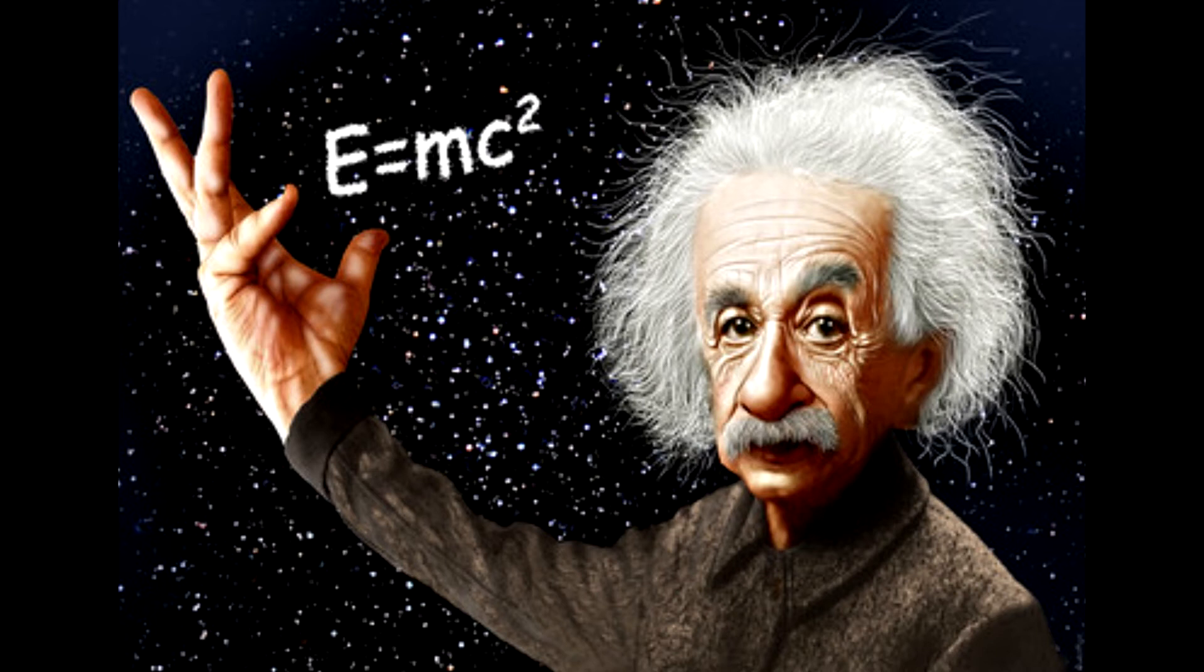It was while employed as a patent clerk in Bern that he published his first theory of relativity. This contained his famous equation, E equals mc squared, which explains the relationship between mass and energy.